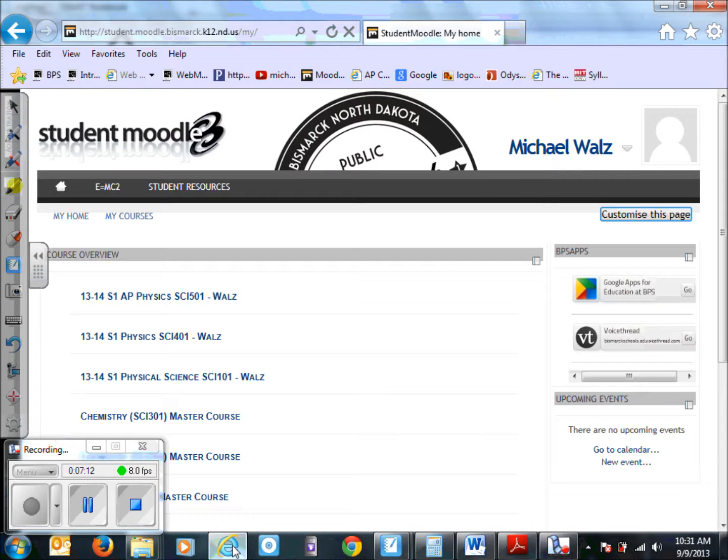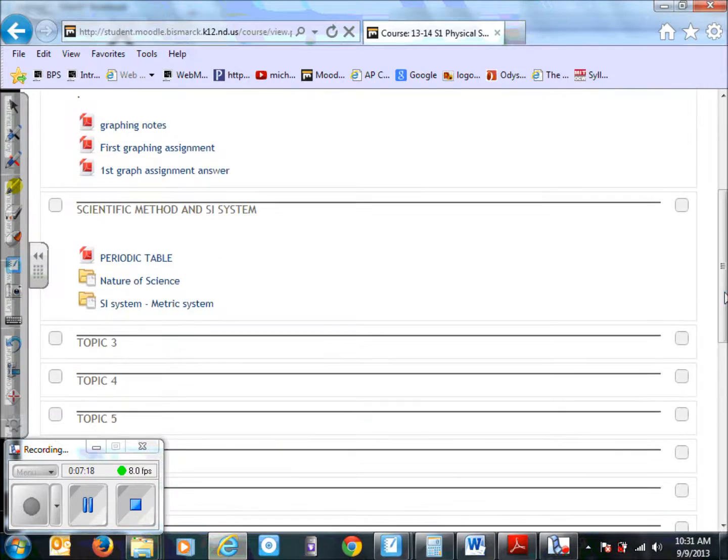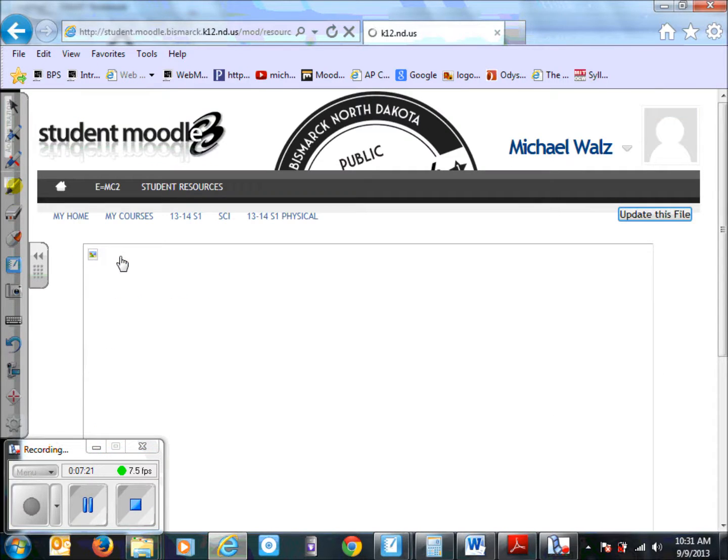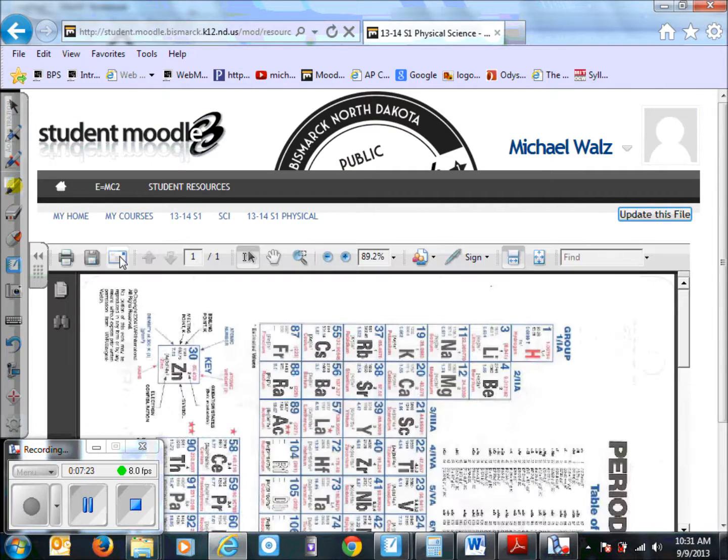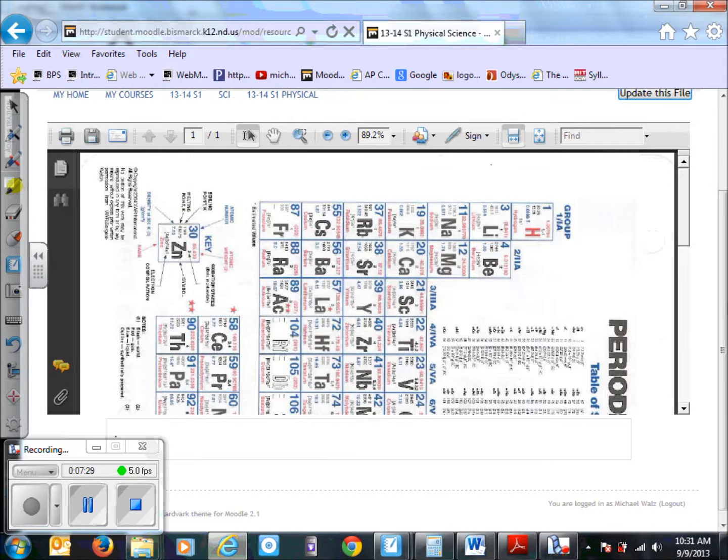If you look on our Moodle course here, I also have that in a number of spots. Here it is right here: the periodic table. You're going to have to use this for the first semester. This periodic table is colored, but the one you're going to have won't have the color to it.